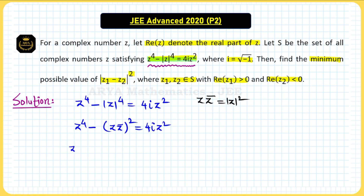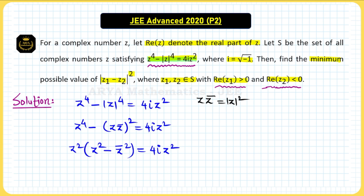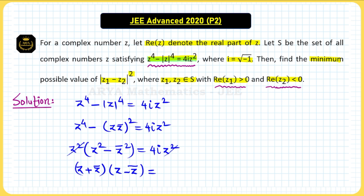Now we take z² as a common factor, giving us z²(z² − z̄²) = 4i·z². Since z1 and z2 have non-zero real parts, z1 and z2 are non-zero complex numbers, so we can cancel z². Then applying the difference of squares formula a² − b², we can write this as (z + z̄)(z − z̄) = 4i.